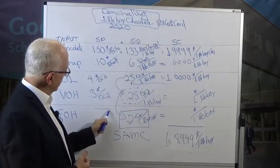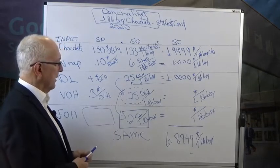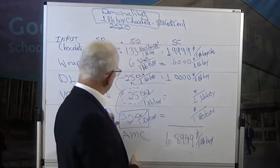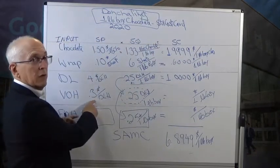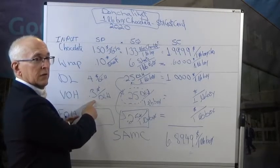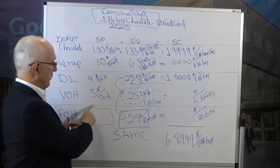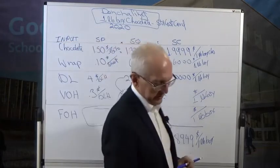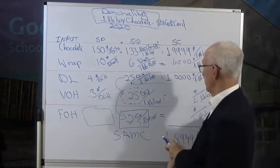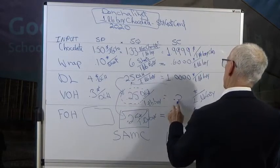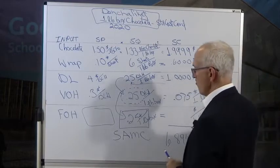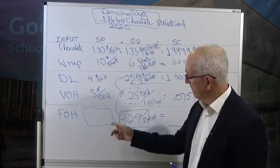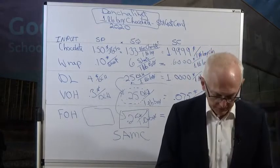Now we have to fill in the fixed overhead predetermined rate (FOHPOR). We start with the $58,400 total fixed cost. We need to know how we're going to overhead-rate charge this — based on what? We're paying overhead for the number of units produced, so the budgeted production volume has to loop back in here.